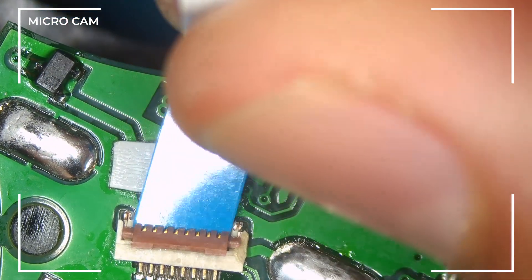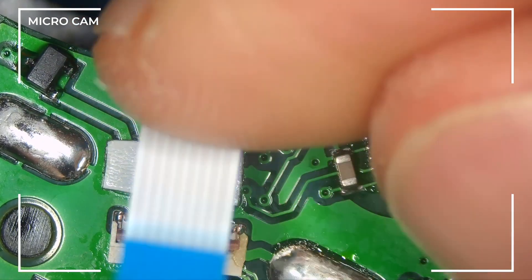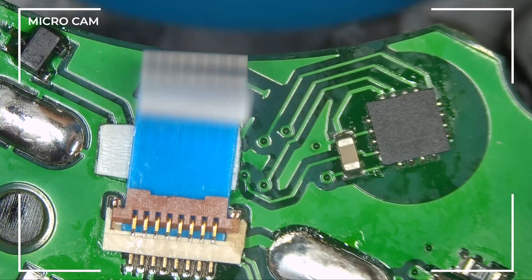Let's carefully open the latch of the ribbon cable connector and insert it. Close the latch and the ribbon cable is seated in place. Very nice!